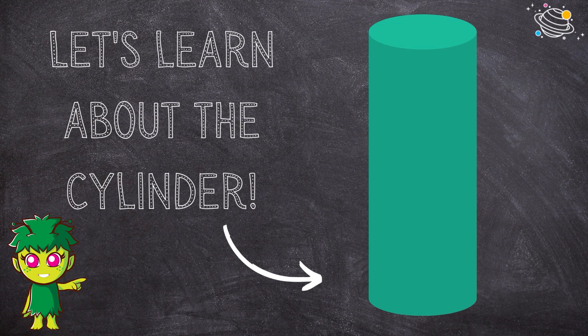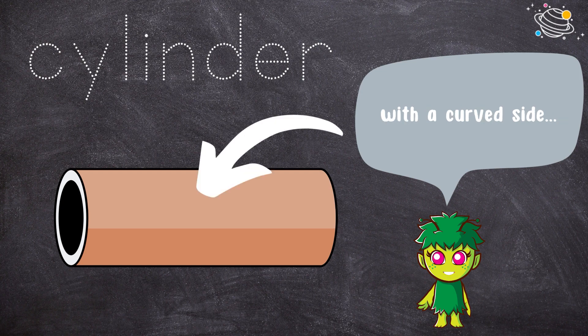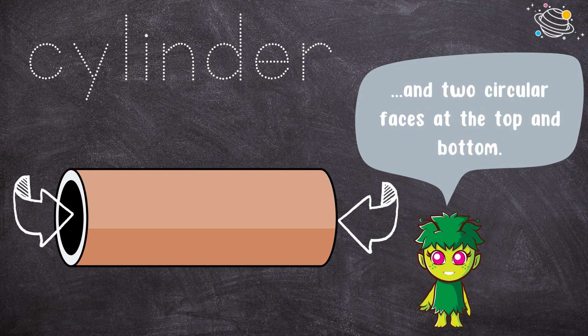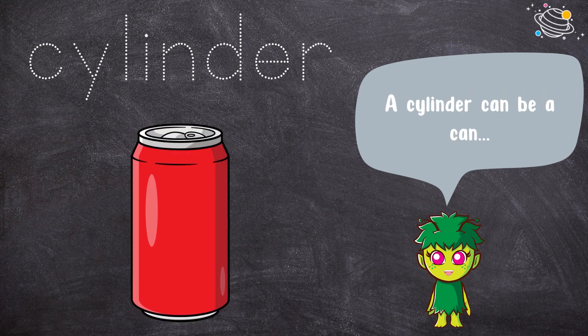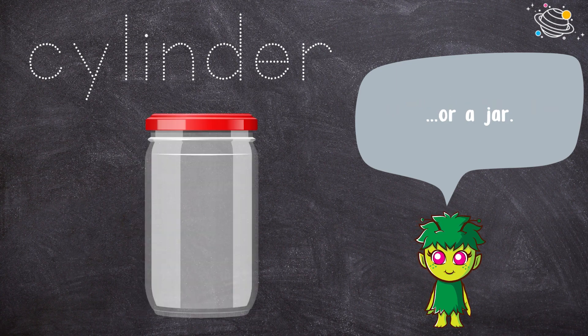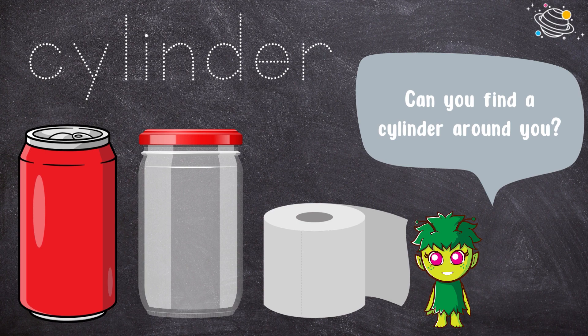Let's learn about the cylinder. It has a tube shape with a curved side and two circular faces at the top and bottom. Can you find a cylinder? A cylinder can be a can or a jar. Can you find a cylinder around you?